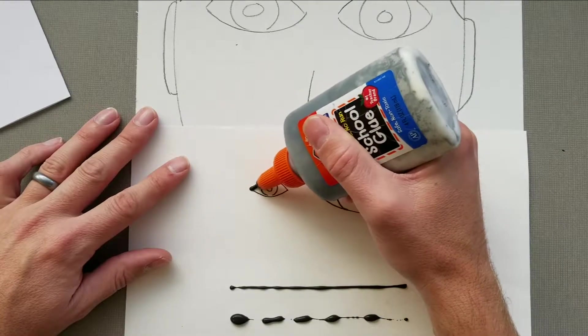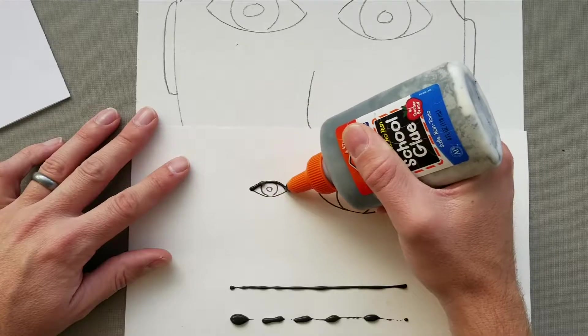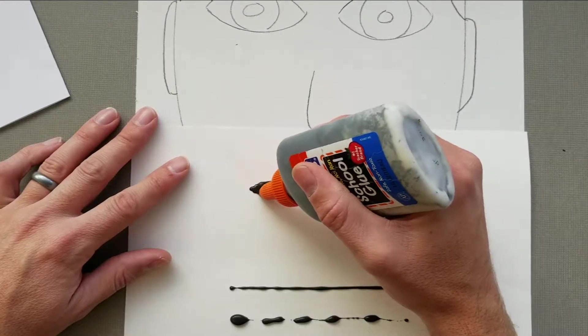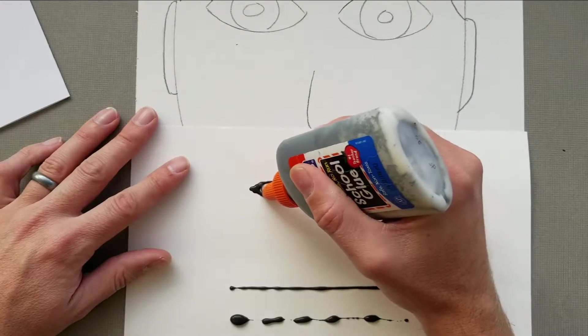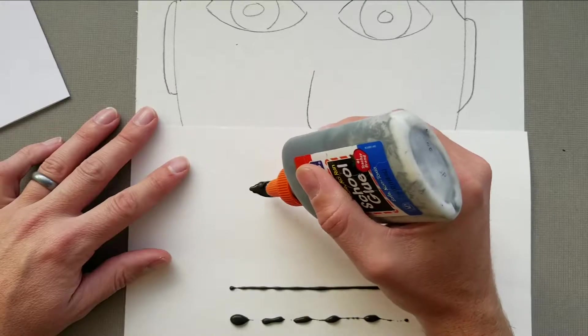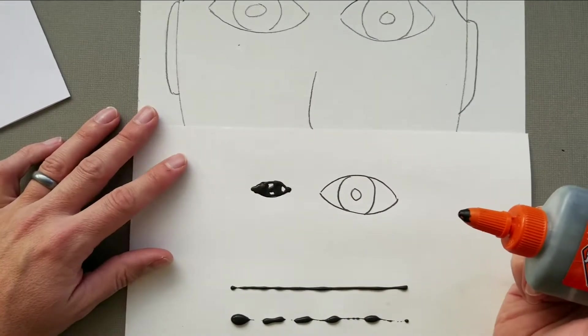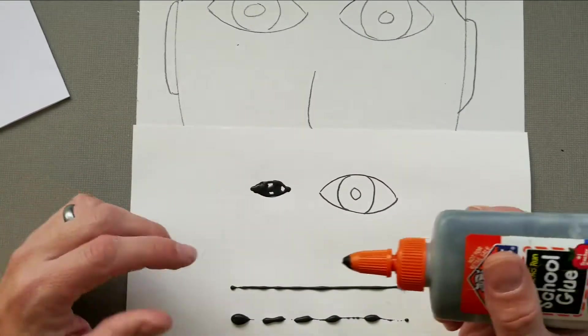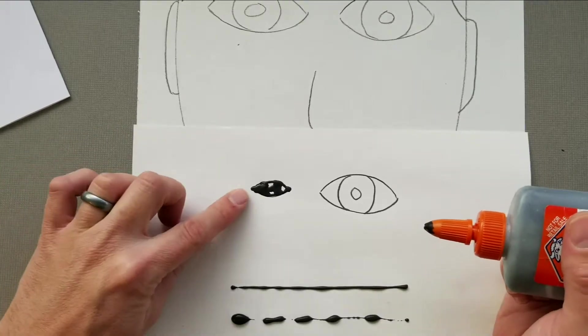Even if you do your most careful job of tracing - I'm trying to do a really careful job - it's so tiny that the glue just ends up running together and it ends up looking like a blob. It's not very good.